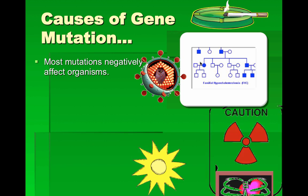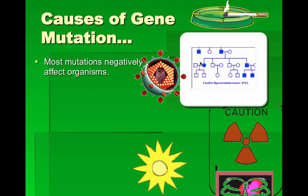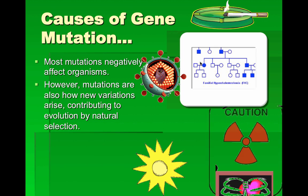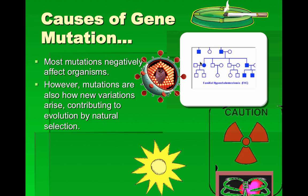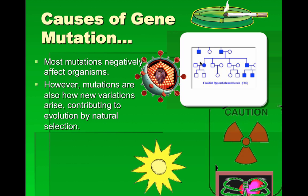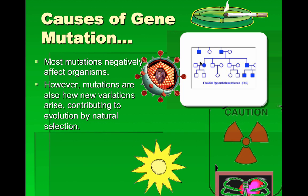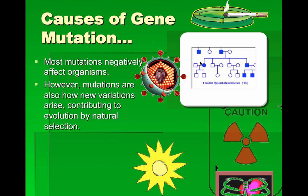Extensive mutations can lead to cancers and other problems. Viruses can also insert bits of DNA that cause gene mutations or abnormal functioning. Most mutations negatively affect organisms; however, mutations are the primary way that new forms can arise. Mutation is one of the key ways that evolution actually occurs, allowing new physical traits to emerge.